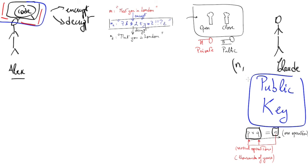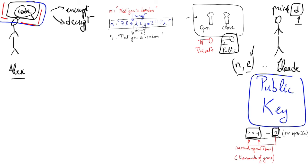Before generating his public and private key, Claude takes two large prime numbers, computes their product N, and publishes N as the first part of his public key. He then computes another number E for encryption, which becomes the second part of the public key, and keeps the number D private. So Claude publishes N and E, and keeps D secret. E is the key only able to close the box, and D is the key only able to open it.